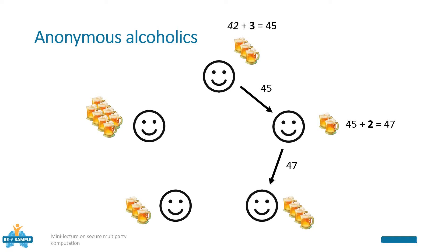Now the second alcoholic adds his private amount of beers to the received value, and passes it further on to the next one, and so on and so forth, until it reaches again the first guy.